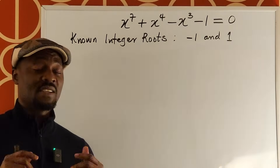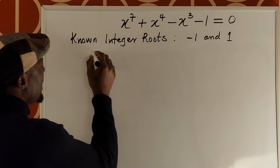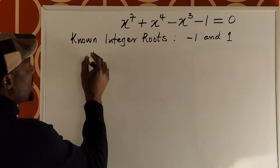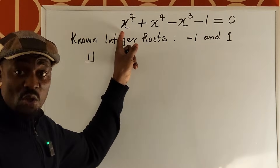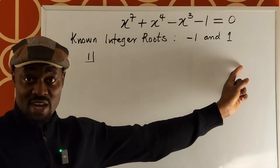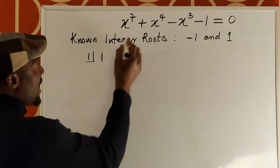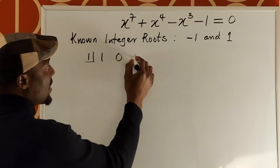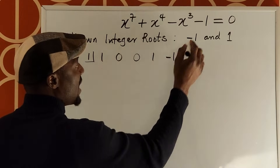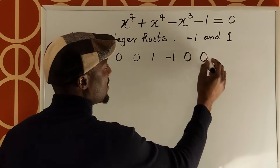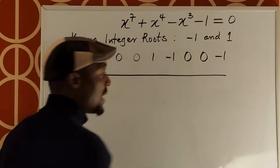When setting up synthetic division, we write out the coefficients of all terms. This is a seventh-degree polynomial, so we need eight coefficients. The coefficient of x to the seventh is one; x to the sixth is zero; x to the fifth is zero; x to the fourth is one; x to the third is negative one; x squared is zero; x to the first is zero; and the constant is negative one.